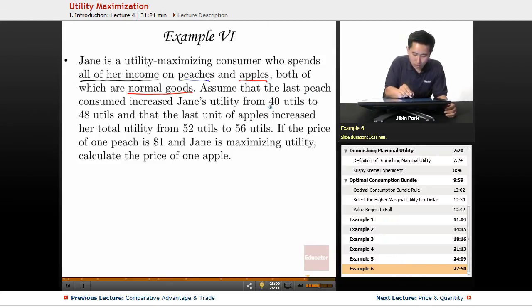Assume that the last peach consumed increased Jane's utility from 40 utils to 48 utils, and that the last unit of apples increased her total utility from 52 utils to 56 utils. If the price of one peach is $1 and Jane is maximizing utility, calculate the price of one apple.